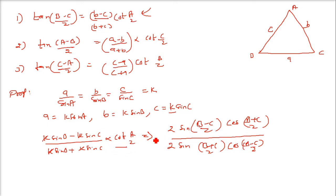This will remain here. 2 gets cancelled. Sine (b minus c) by cos (b minus c) will be what? It will be tan of (b minus c) by 2.